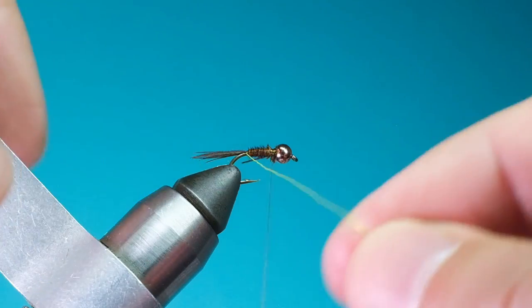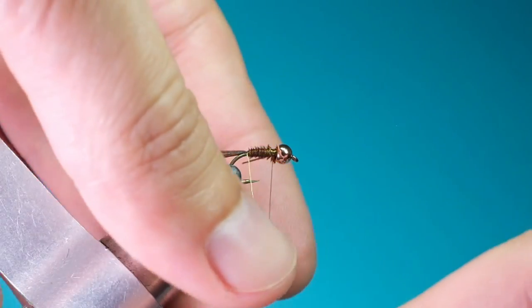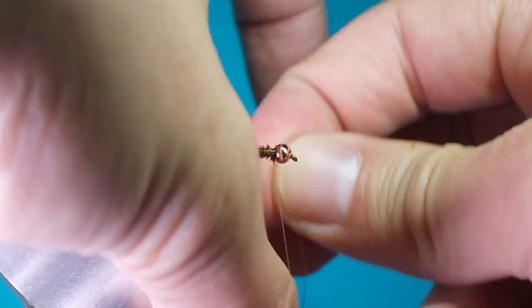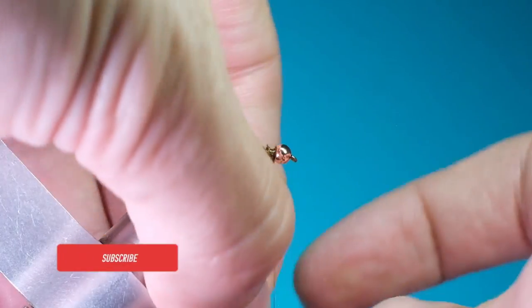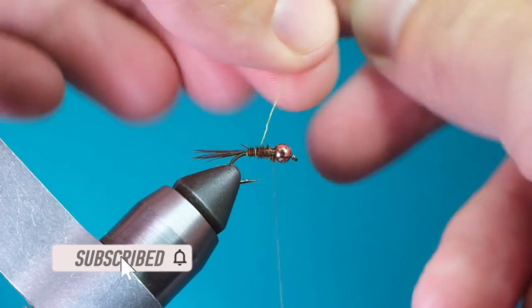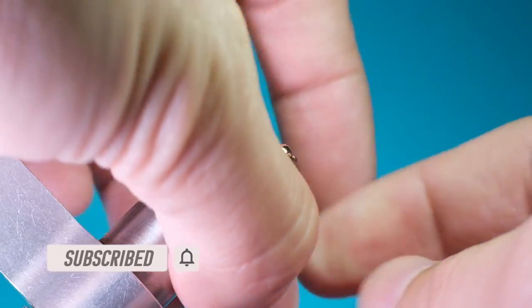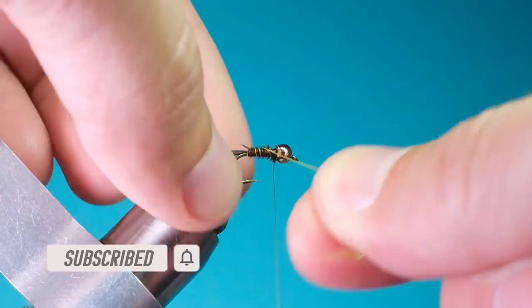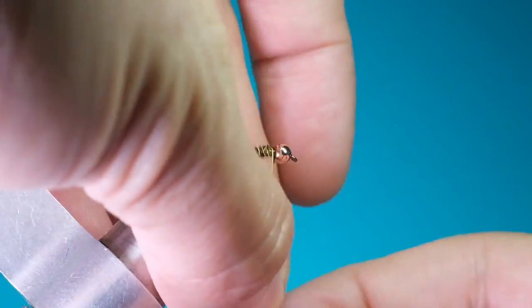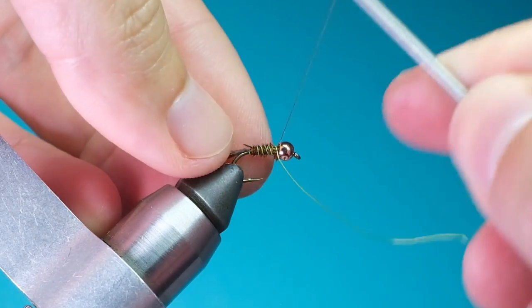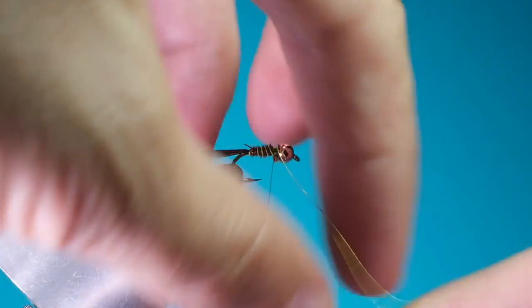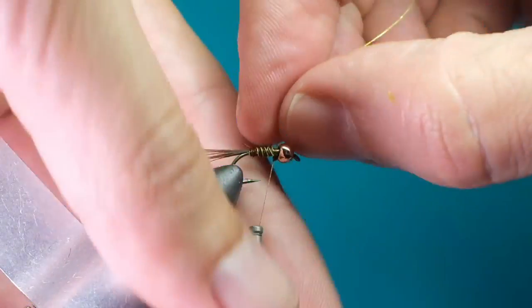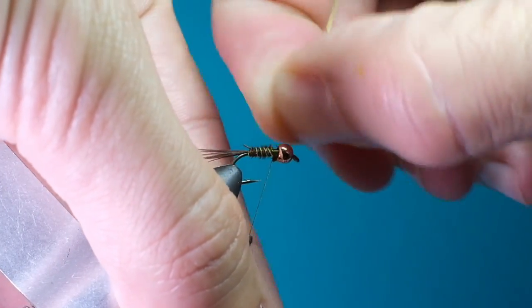Next, counter wrap the ultra wire around the pheasant tails to add some stability to the fibers. While I give this ultra wire the old wrap-a-roo, why not hit the subscribe button so you can see more tutorials like this one and stay on top of our monthly giveaways. Once you get the ultra wire to the front of the pheasant tail, right behind the bead, wrap your thread behind the wire a couple times. Then in front of it a couple times before bending or breaking it off.